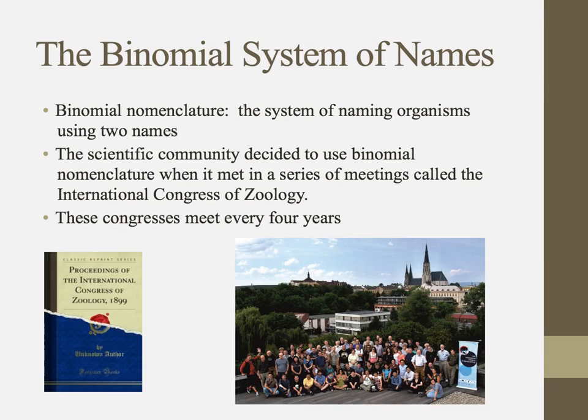When we're identifying and naming species, we often don't use the common name, but instead use something called binomial nomenclature. "Nomen" refers to name, and "bi" refers to two. So it's a system of naming organisms using two names.